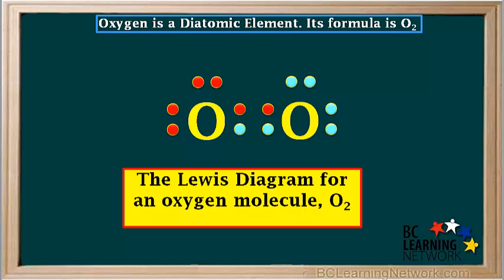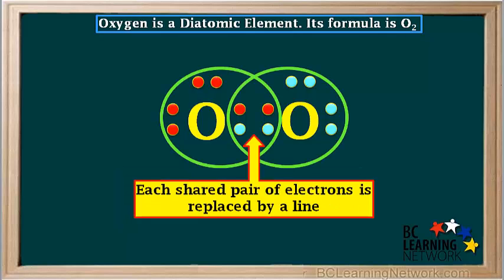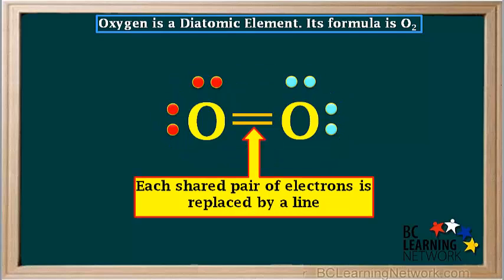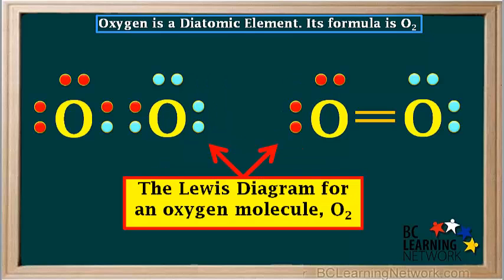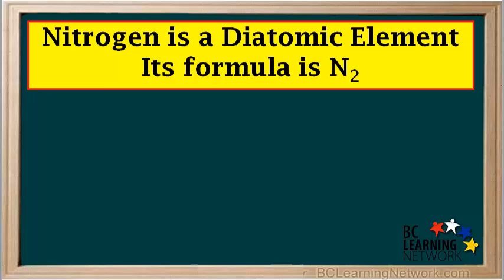So this is one way of writing the Lewis diagram for the oxygen molecule O₂. As we saw before, in the Lewis diagram we can replace a shared pair of electrons with a line. Here there are two shared pairs and each one is replaced by a line, so there are two parallel lines like this. This is called a double covalent bond, or simply a double bond. So these are both correct ways of drawing the Lewis diagram for the diatomic oxygen molecule O₂.